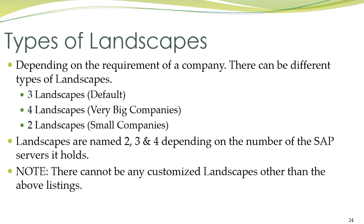There are three types of landscapes depending on the requirement of a company. The first and default landscape is the three-server landscape. There is also a four-server landscape configured in very large companies, and a two-server landscape configured in very small companies. Landscapes are named two, three, and four depending on the number of SAP servers they hold. There cannot be any customized landscapes other than these listed ones.